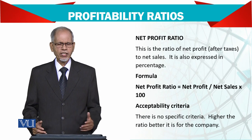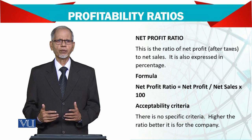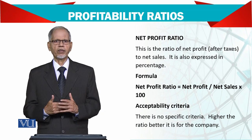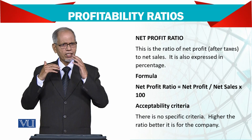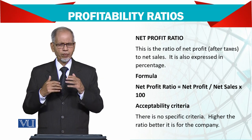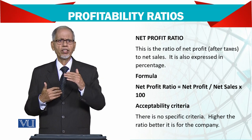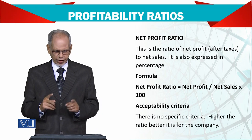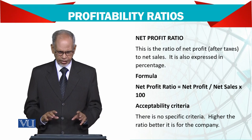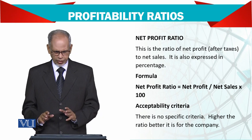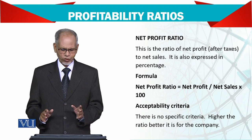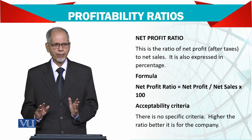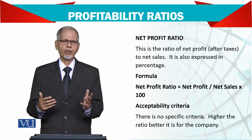Net profit is the final figure of the income statement. You take the net profit and divide it by sales — though not necessarily sales; there can be many other items used as the denominator. The formula is: net profit divided by net sales multiplied by 100. There is no specific acceptability criteria; the higher it is, the better.